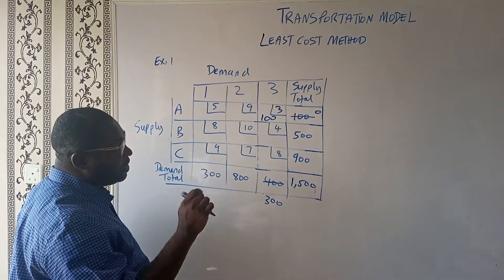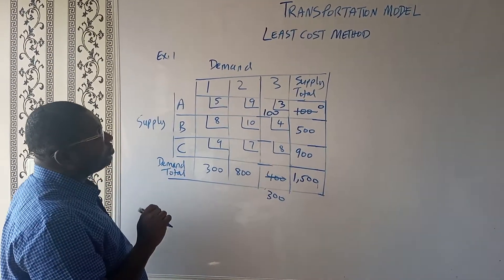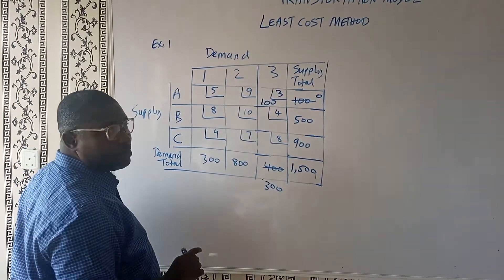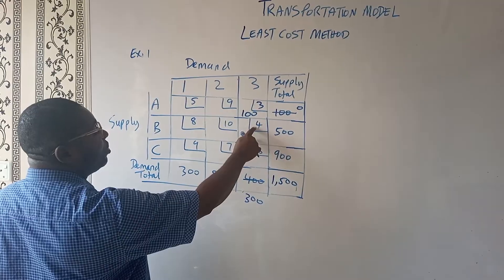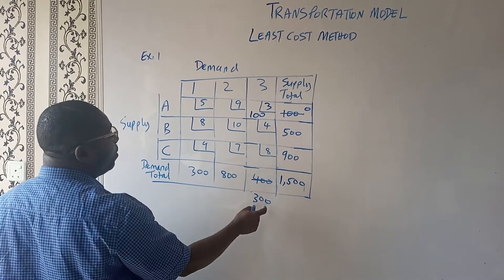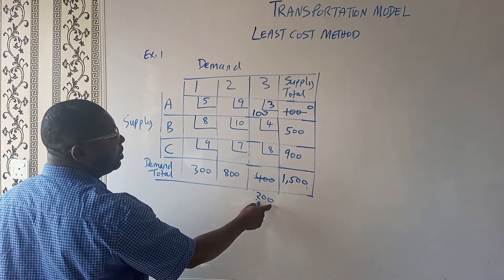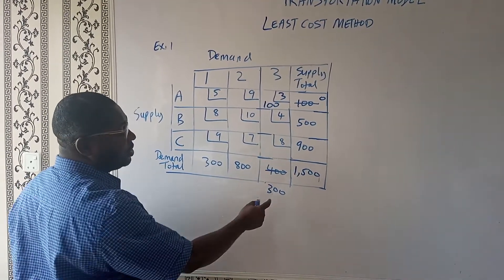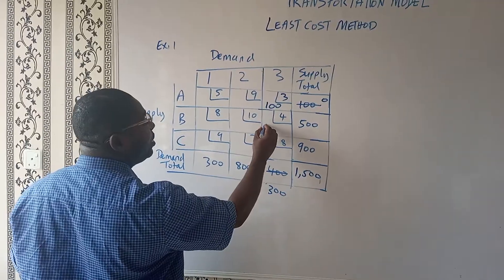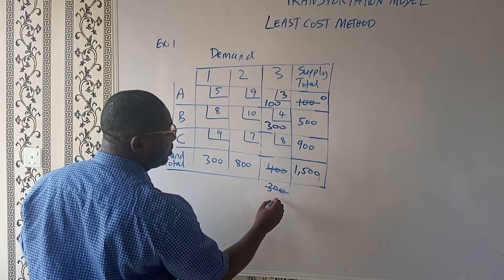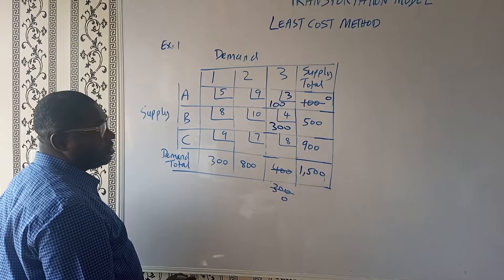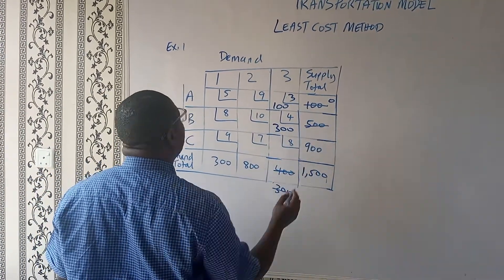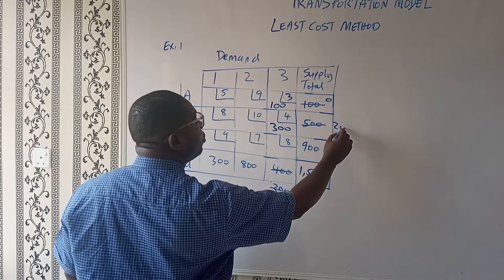Now, which cost is the next least cost? I can see 4 here — 4 is the next least cost. What we'll now do is fill up the demand from center 3 from the supply of B, so that 300 will come in here. This will satisfy center 3 fully, but then reduce the supply of B to 200.